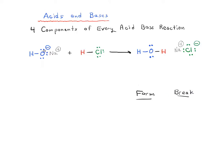We have OH⁻ reacting with HCl — hydroxide ion and HCl — and we're forming water and sodium chloride. We are forming a bond between oxygen and hydrogen, and we are breaking a bond between hydrogen and chlorine. So our hydrogen is essentially changing places, swapping between chlorine and oxygen.